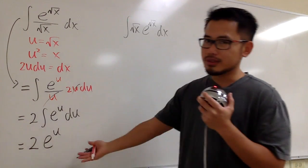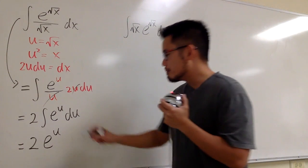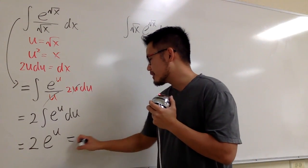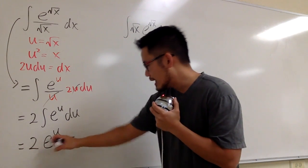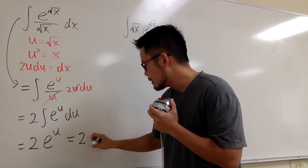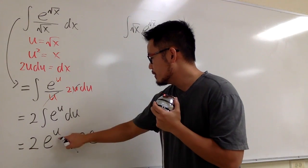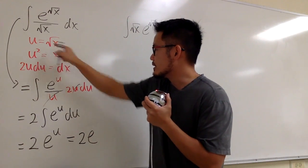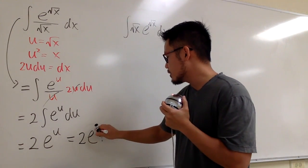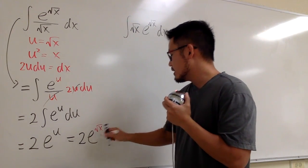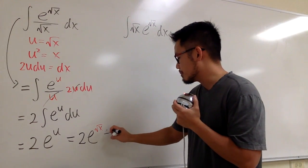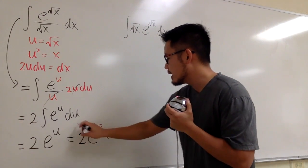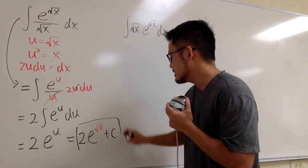We are done with the integration. We take the result back to the x world, so we have 2e to the u, where u is square root of x. The final answer is 2e to the square root of x, plus C.